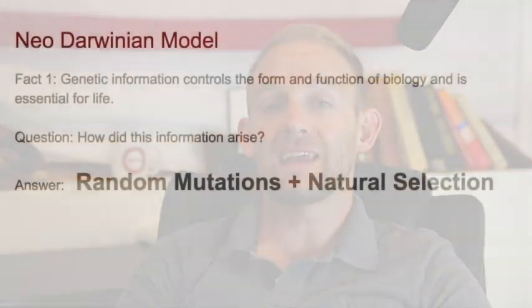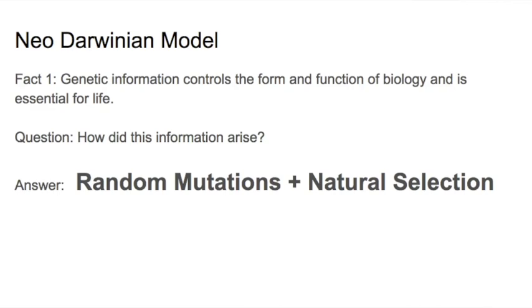Essentially, everyone agrees that it is the information in the DNA code that controls the form and function of biology. But the question evolutionary theory must answer is, how did it arise? How did we get this information? The classic textbook answer is that random mutations or changes happen in the code, and then natural selection over time eliminates the harmful changes, thus only leaving us with beneficial changes which build up over long periods of time.